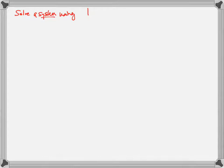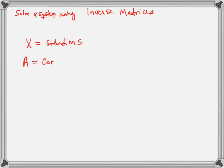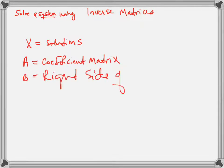We're going to solve a system of equations using inverse matrices. We're going to let matrix X be our solutions, matrix A be the coefficient matrix, and matrix B be the right side of the original equations.